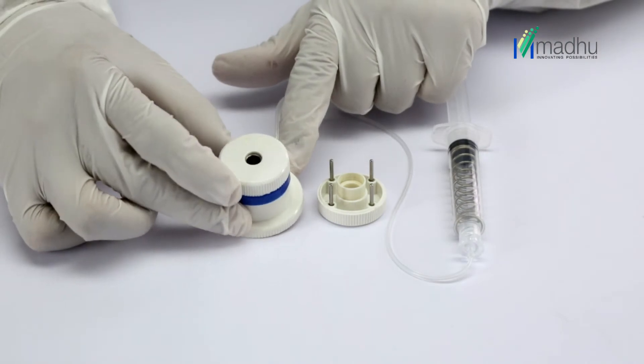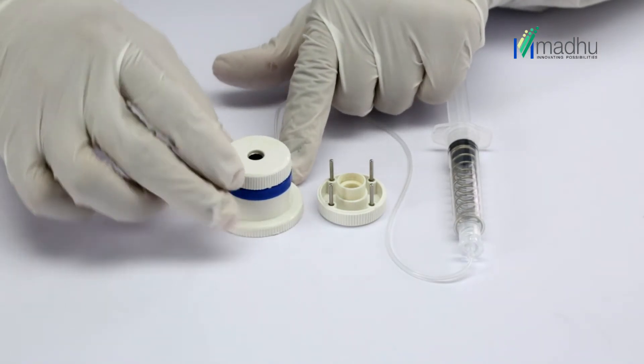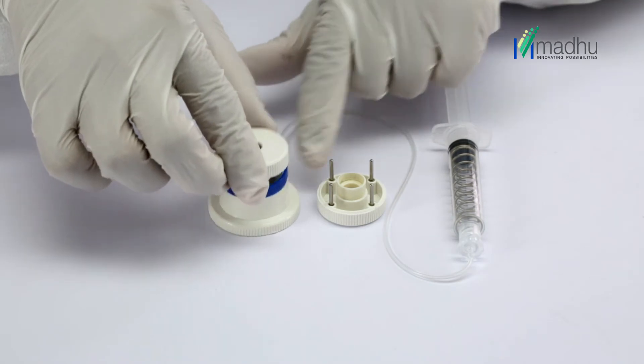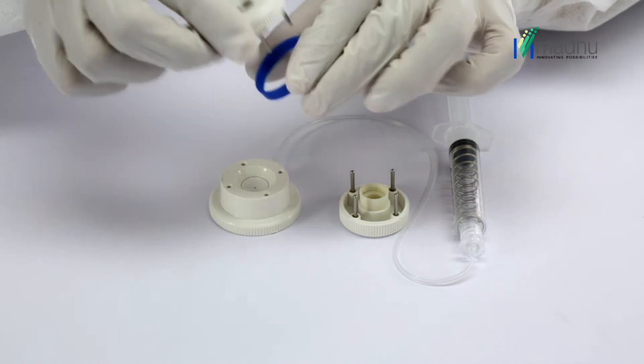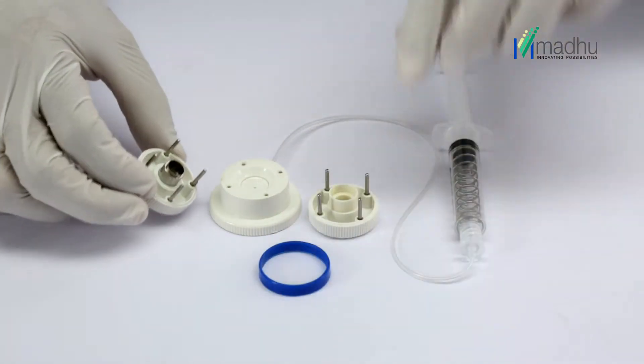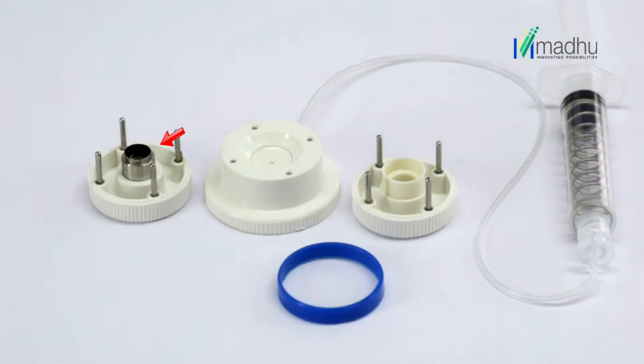Hold the cutting block base with one hand and pull the trephine blade housing upward with the other hand. Turn it over and carefully place it on a sterile tray and discard the blue spacer ring. Again verify the blade diameter which is engraved on the stainless steel trephine.